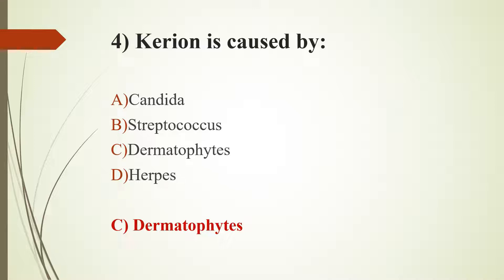Kerion is an inflammatory, pus-filled sore that sometimes oozes, usually appearing on the scalp — called tinea capitis. The most common fungi found in kerion are Microsporum canis and Trichophyton tonsurans.